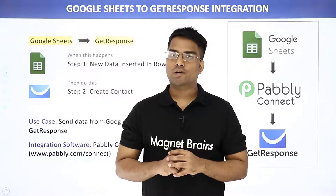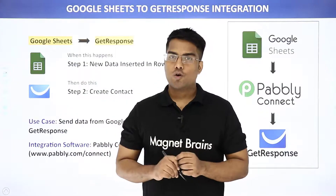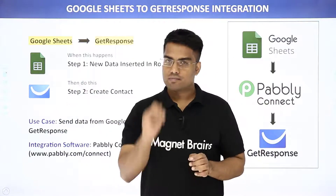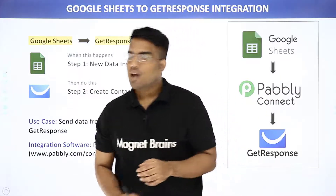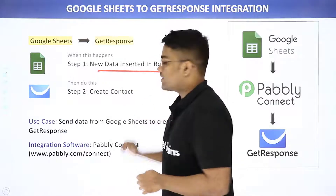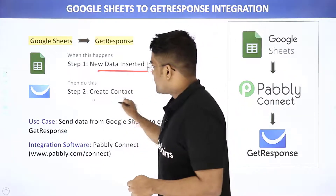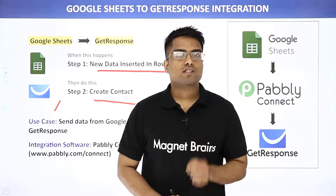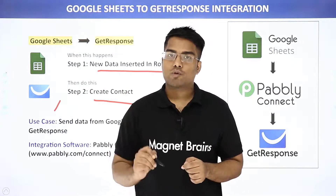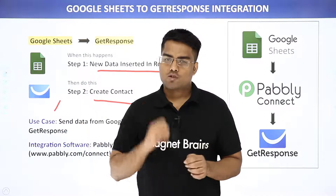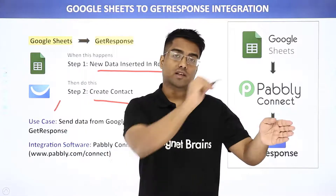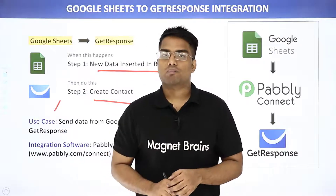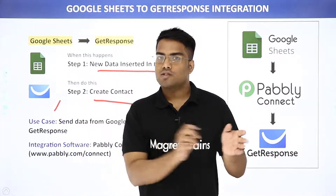Welcome to Pabbly Connect workshop. In this video we are going to learn how to integrate Google Sheets and GetResponse. Our use case is pretty simple: when new data is inserted in Google Sheet, it will create a contact in GetResponse. Google Sheet is your favorite online spreadsheet program and GetResponse is an email marketing tool. So what we are going to do is send the data from Google Sheet to GetResponse.